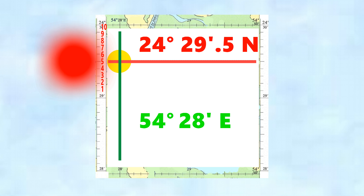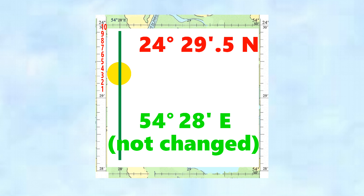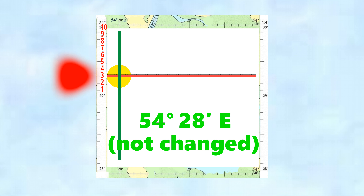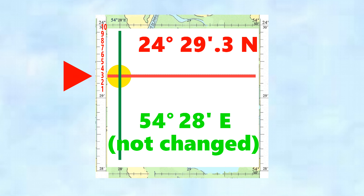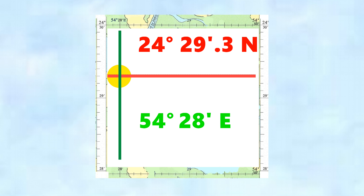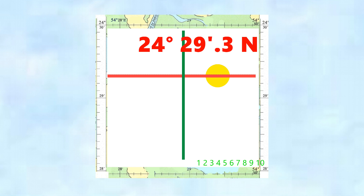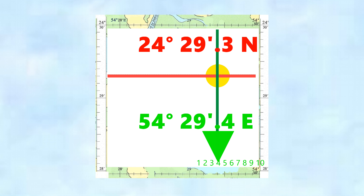Now we've moved the disc up a little bit, so we're on to a decimal: 24 degrees, 29.5 minutes north. The longitude didn't change because we moved directly north. Bringing the golden disc down a little bit, we have a new latitude — 0.3 — so the new latitude is 24 degrees, 29 minutes, 0.3 north. Notice the longitude didn't change. Now moving the disc east, we'll shift the meridian of longitude across as well. That gives us 54 degrees, 29 minutes, 0.4 east.